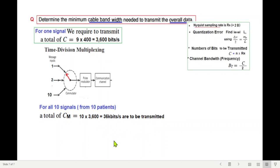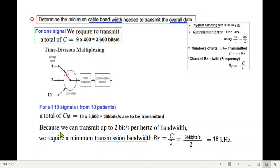For transmitting this, we have already discussed that the channel bandwidth or channel frequency is the data to be transmitted divided by 2, because we can transmit only 2 bits per hertz of bandwidth. The transmission bandwidth BT is C over 2, equal to 36k over 2, equal to 18 kilohertz. So I hope you have been able to follow this. Please let me know through your comments. Thank you.